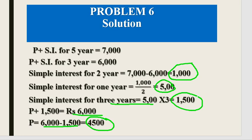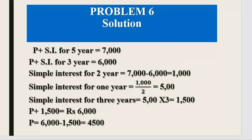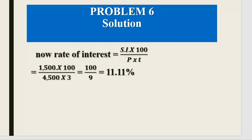Now we calculate the rate of interest. Using the formula: Rate = (Simple Interest × 100) / (Principal × Time). Here, Simple Interest = Rs. 1,500, Principal = Rs. 4,500, and Time = 3 years. So Rate = (1,500 × 100) / (4,500 × 3) = 150,000 / 13,500 = 11.11%, which is approximately 100/9 percent.